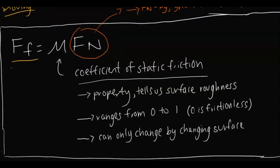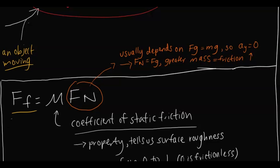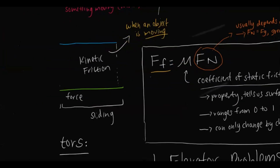The force of friction equals mu times force normal, where mu is the coefficient of friction — either static or kinetic, and the problem will tell you which. The coefficient is a property of the surface describing how rough it is, ranging from 0 (frictionless) to 1, and can only be changed by changing the surface. If the object is not accelerating in the y-direction, then Fn equals Fg, which means greater mass results in more force of friction.